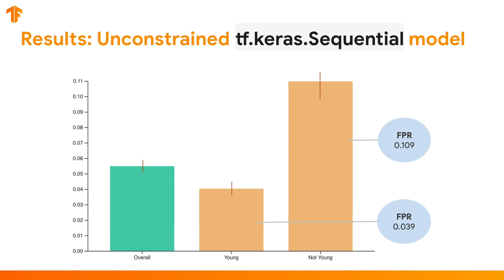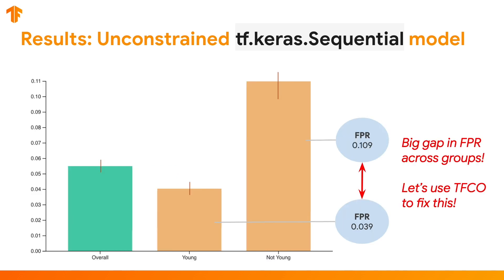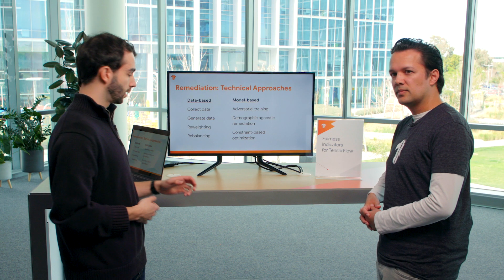In this case we're going to be looking at false positive rates specifically. As you can see, there's actually a really large gap between the young slice, where the false positive rate is around 4%, and the not young slice, where it's about 11%. So what do we do?